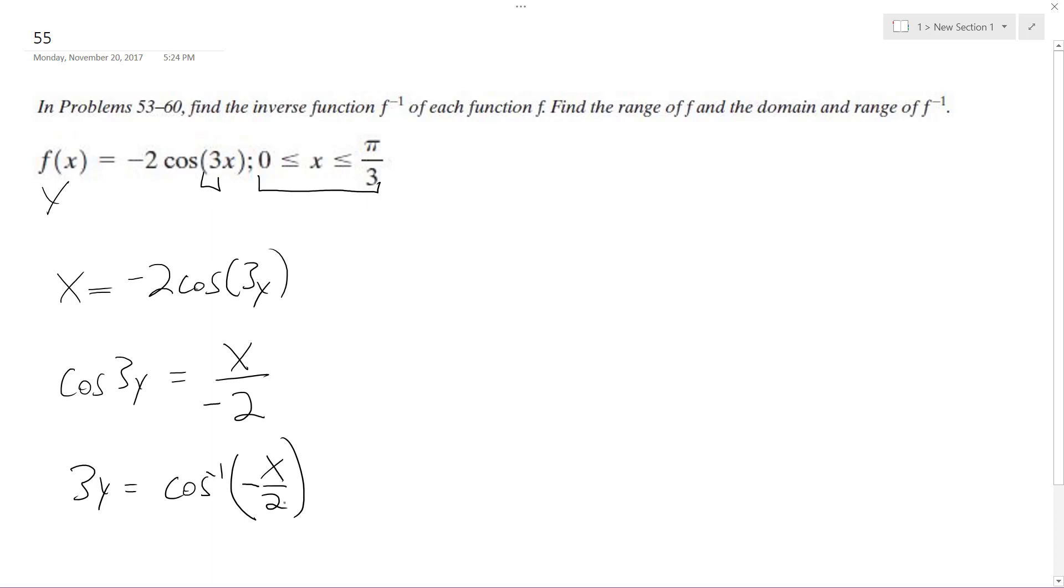Because it's negative x over 2, then divide through by 3. So ultimately, what we're going to end up with is one-third inverse cosine of x over 2.